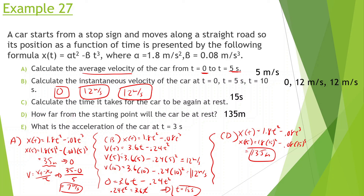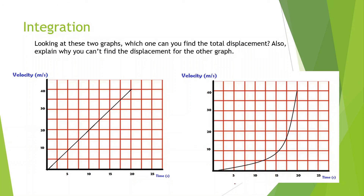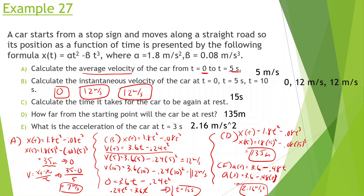Part E: What is the acceleration at t = 3 seconds? Taking the derivative of v(t) = 3.6t - 0.24t², acceleration is a(t) = 3.6 - 0.48t. At t = 3: a = 3.6 - 0.48(3) = 3.6 - 1.44 = 2.16 meters per second squared. Hopefully that all made sense! Next time we'll learn about integration — the second main topic of calculus.